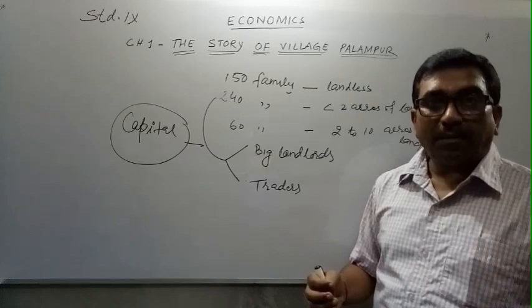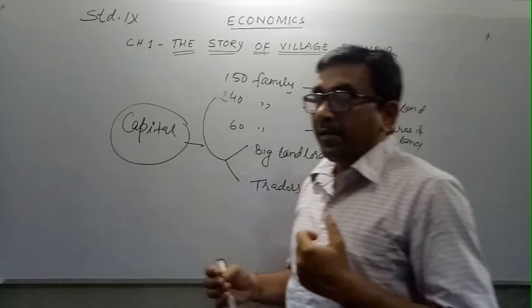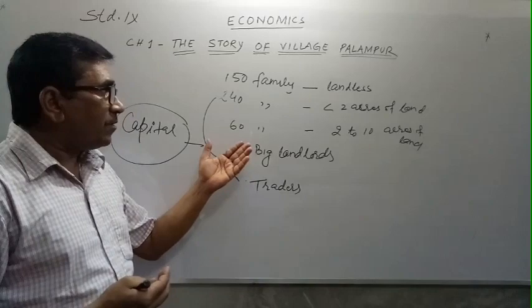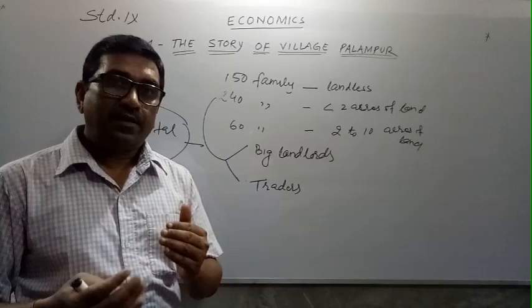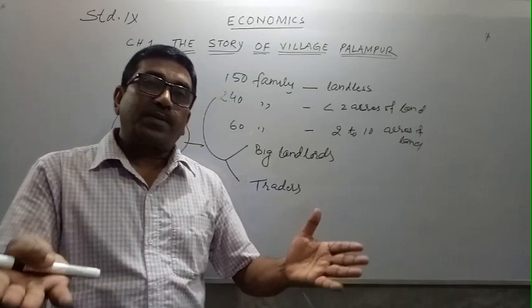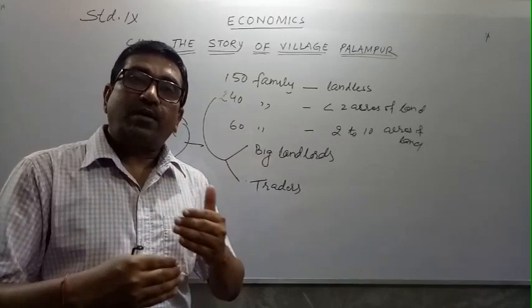So easy access is only through moneylenders, traders, or big landlords. These marginal farmers have to manage their capital but are caught in a debt trap. They have to take loans and therefore fall further into debt.